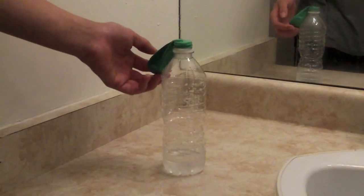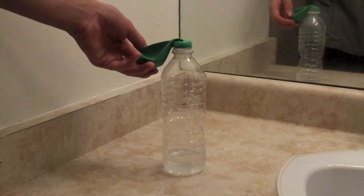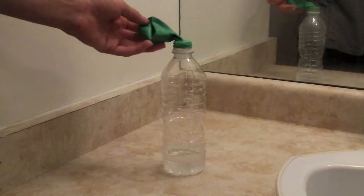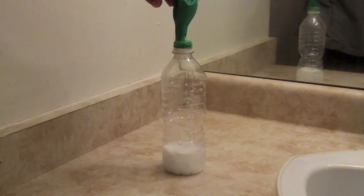Place some vinegar at the bottom of the bottle and some baking soda in the balloon, and try to put it on. It took me a while to do, which is why I have a different color balloon.